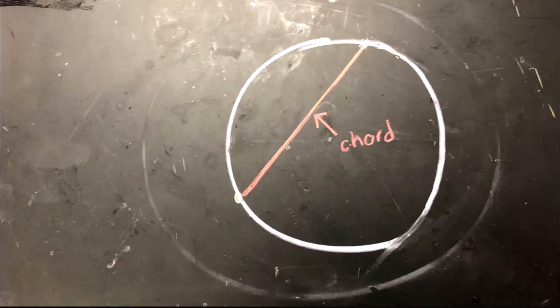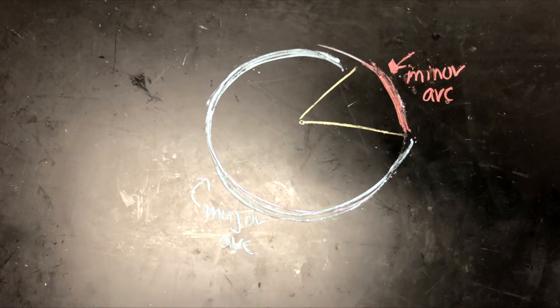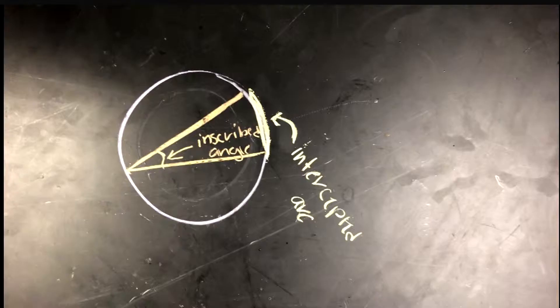Circles can contain eight different parts, including diameters, chords, arcs, minor arcs, major arcs, central angles, inscribed angles, and intercepted arcs.